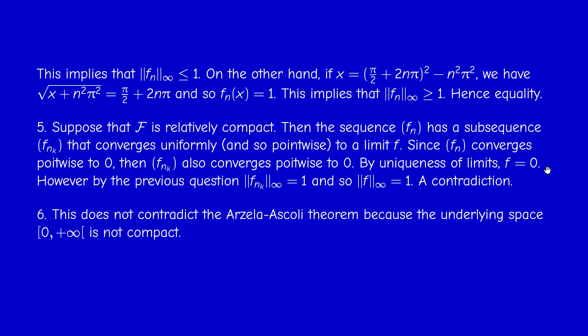So F is not relatively compact. This does not contradict the Arzelà-Ascoli theorem because the underlying space is not compact. If you go back to the assumptions of Arzelà-Ascoli, you will find that you are working on a compact space X — in the general form, X is a compact metric space and Y is complete. This concludes the video and the exercises of section 1.1. In the next video, I'm going to talk about the Stone-Weierstrass theorem. Thank you for your attention and see you next time.